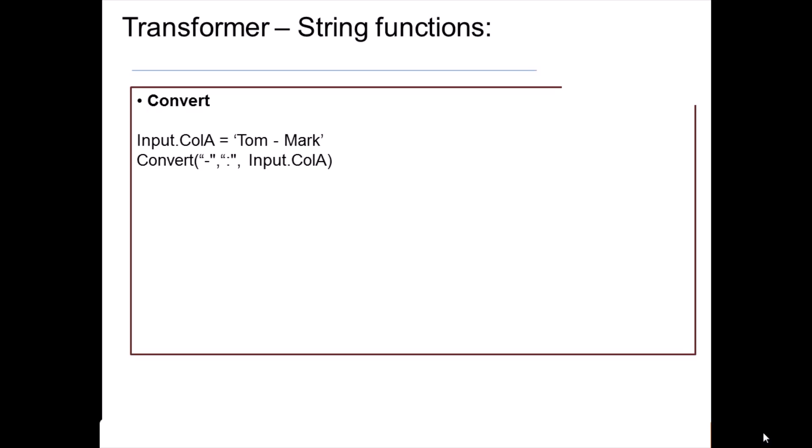Within the functions, go to the string function category and select the convert function. Once selected, the convert function will be populated in the derivation box, but it will expect some input parameters. Each function has its own syntax and demands its own input parameters. The first parameter is the hyphen — the character we want to replace. The second parameter is the colon — the character we want to replace it with. The third parameter is the input column A. So the output would be 'Tom:mark'.